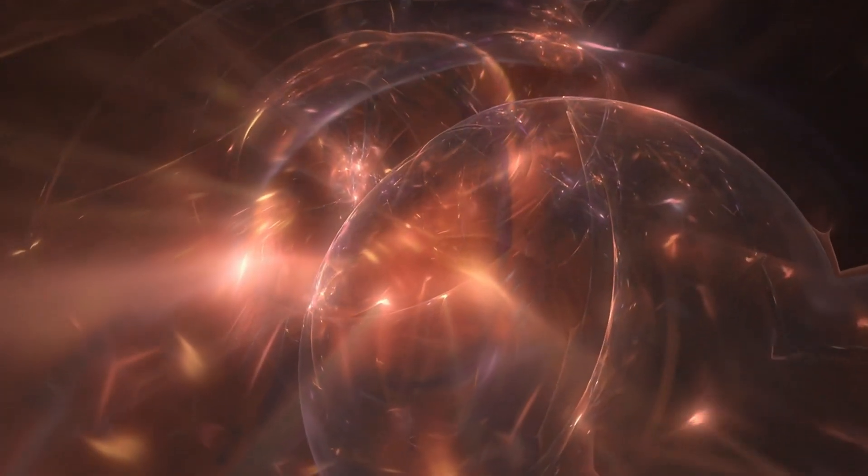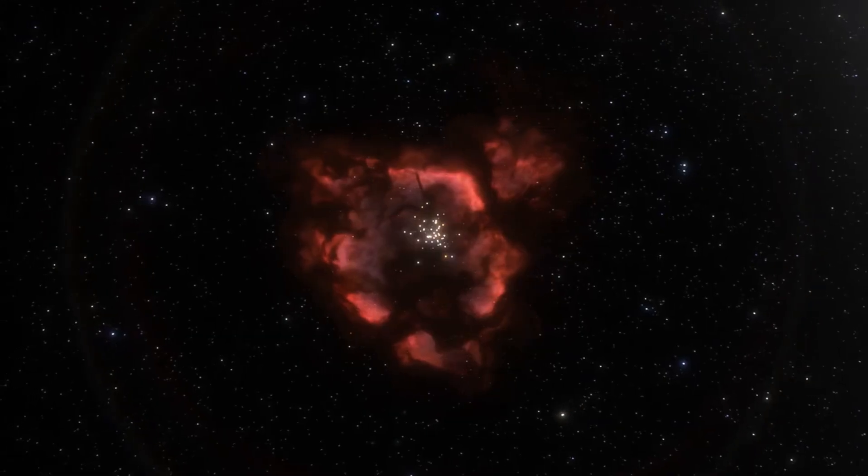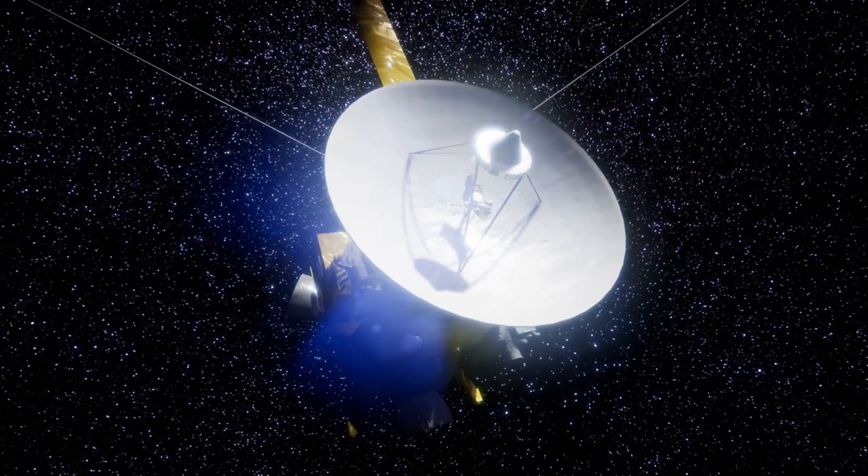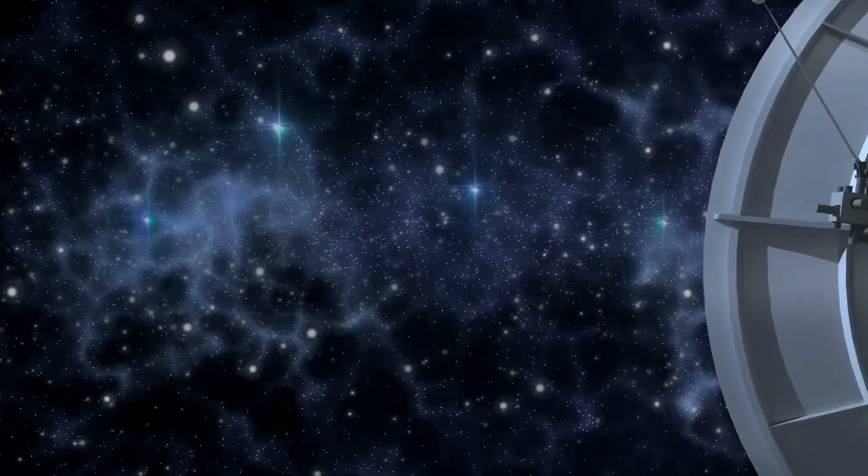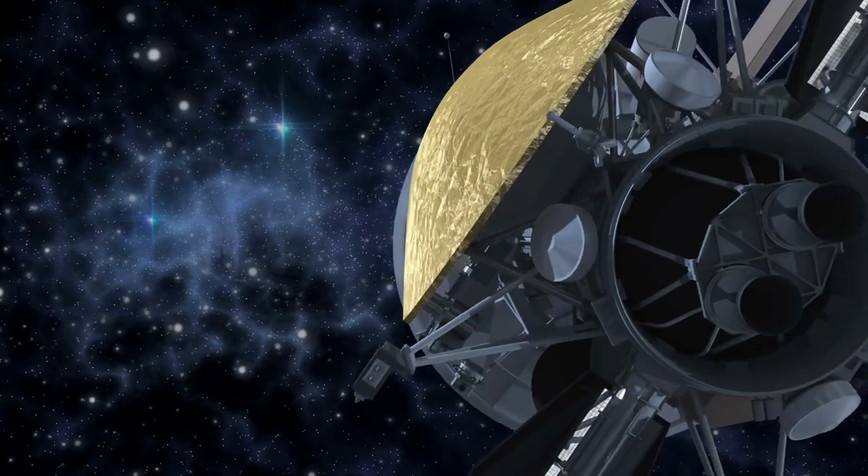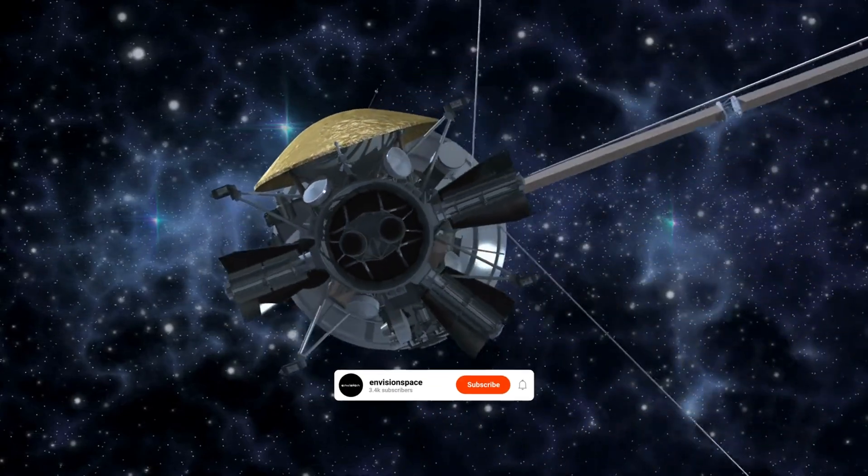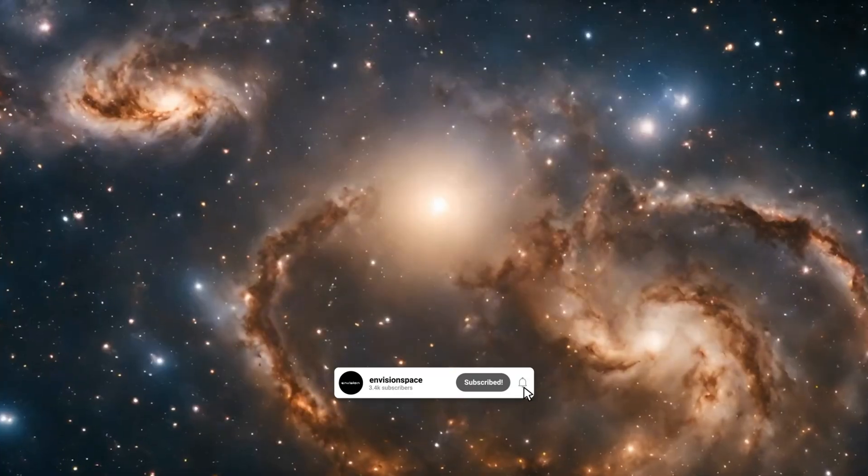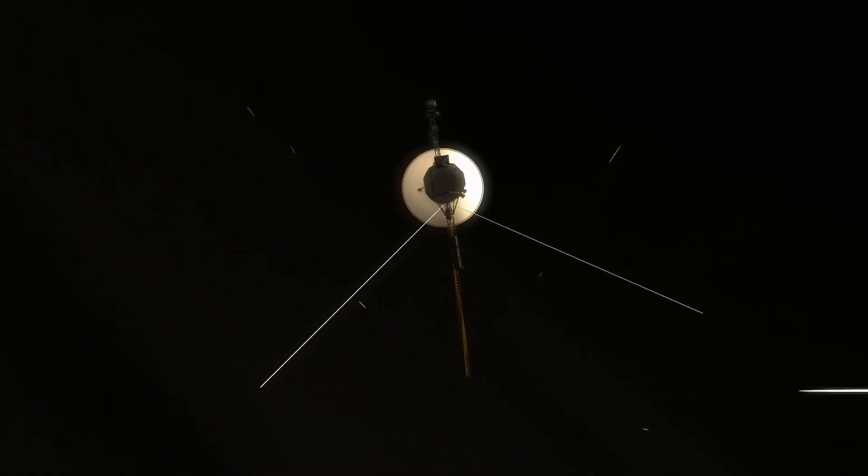Since the spacecraft was launched, it has been sharing information this way. But for the last few months, instead of sending the usual mix of scientific information and spacecraft health data, the TMU was sending a strange and repetitive sequence of ones and zeros that didn't make any sense.